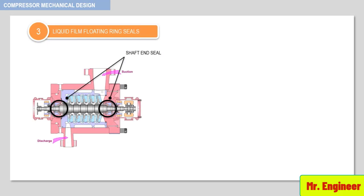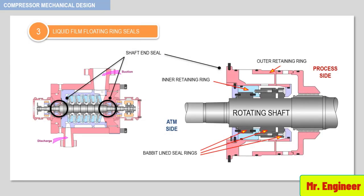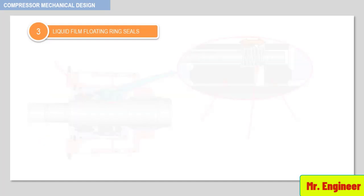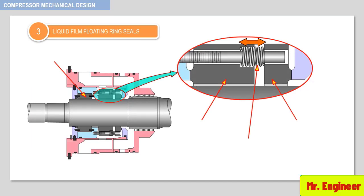The figure depicted here shows a standard liquid film floating ring seal. The seal assembly consists of a seal cartridge to which are fitted three babbitt-lined seal rings and a retaining ring. The cartridge is retained by means of an outer retaining ring. The three babbitt-lined seal rings are namely the inner seal ring, the outer seal ring, and the restriction seal ring.